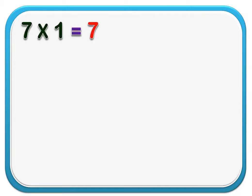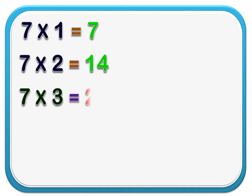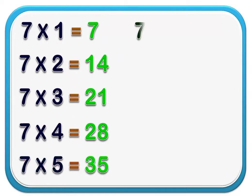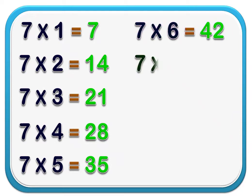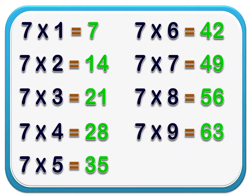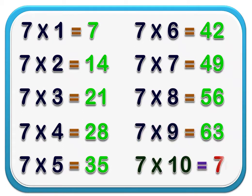7 1's are 7. 7 2's are 14. 7 3's are 21. 7 4's are 28. 7 5's are 35. 7 6's are 42. 7 7's are 49. 7 8's are 56. 7 9's are 63. 7 10's are 70.